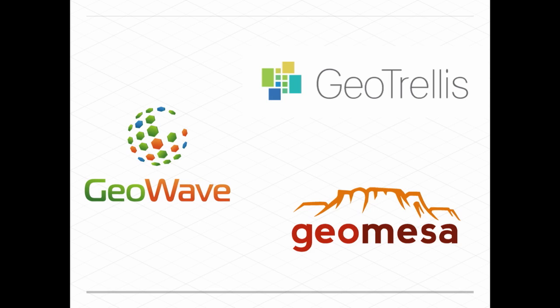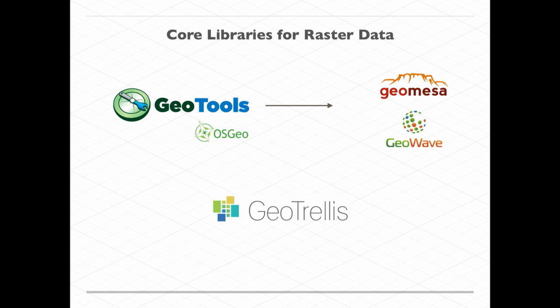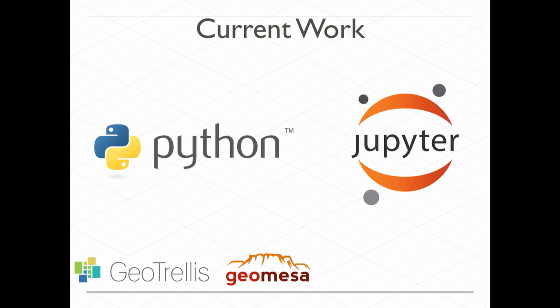At their core, these three geospatial projects use some of the same open source geospatial technology. For vector data, JTS is a Location Tech project — if you're doing any computational geometry in Java, check that out for things like polygon intersection and cropping. It's used by GeoTools, the main library behind GeoMesa and GeoWave. For raster data, GeoMesa and GeoWave use the Java-based GeoTools, and we wrote our own core raster types to be very fast. There's also current collaboration between GeoTrellis and GeoMesa on exposing Python bindings to work with this stuff through Jupyter notebook.